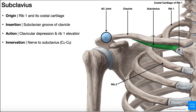You can see the subclavius muscle here in green. It's named that because 'sub' means below, and it's right below the clavicle. The origin is on rib one — the bony part — with a little bit of origin on the costochondral junction and the cartilage of rib one. You can see the direction of the muscle fibers: they run more horizontally and outward, inserting on the underside of the clavicle at the subclavian groove.